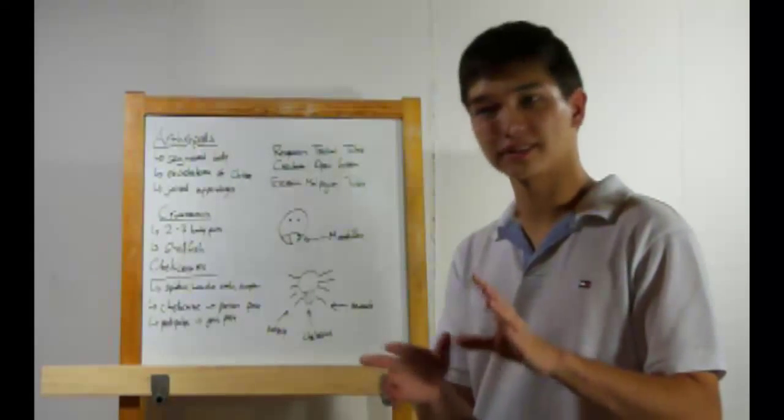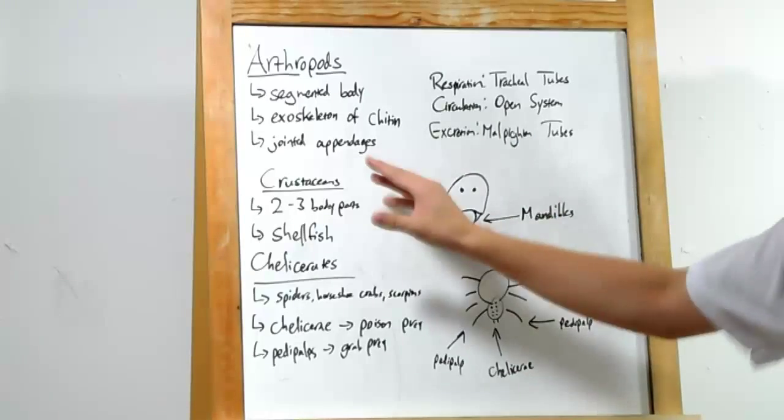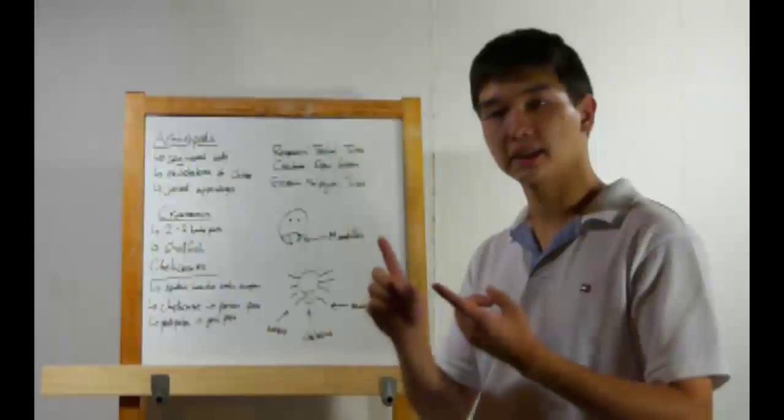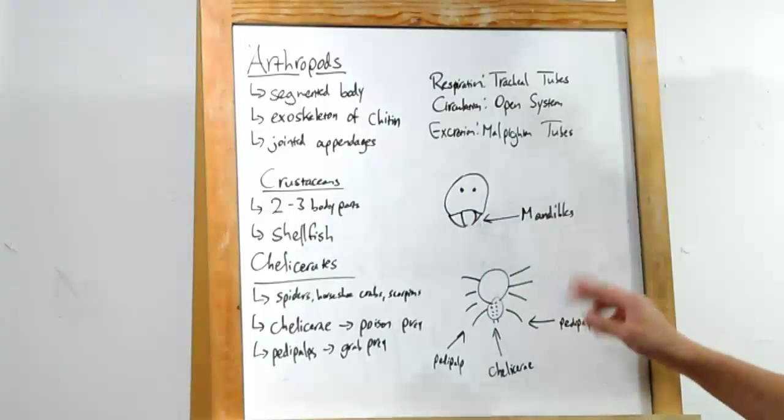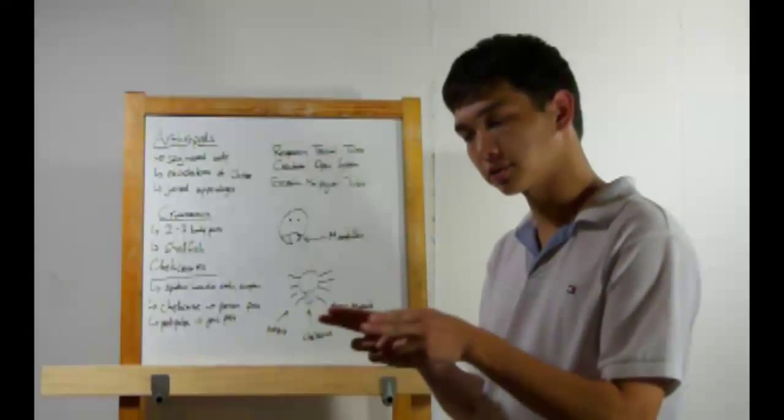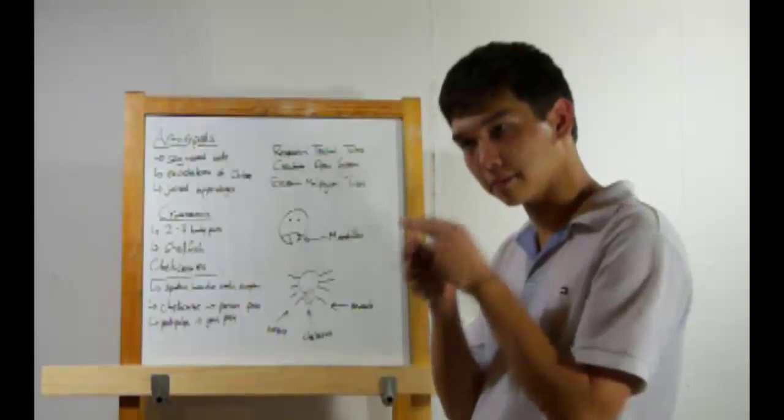General characteristics done, let's move along to some specifics. In crustaceans, think shellfish. Think lobsters, crabs, that kind of thing. These have two to three body parts and mandibles. These are pincer-like structures right by the mouth. They're used to grind up food.